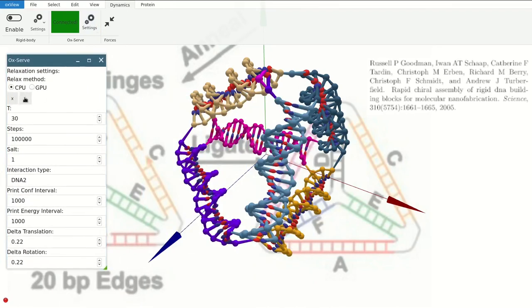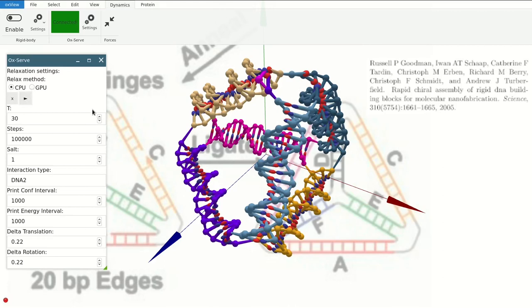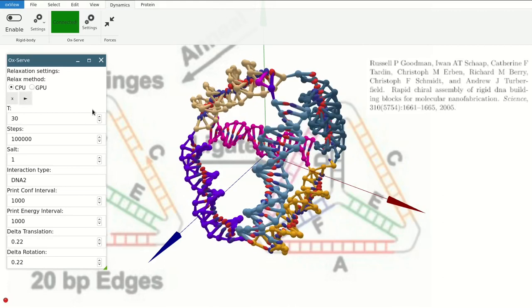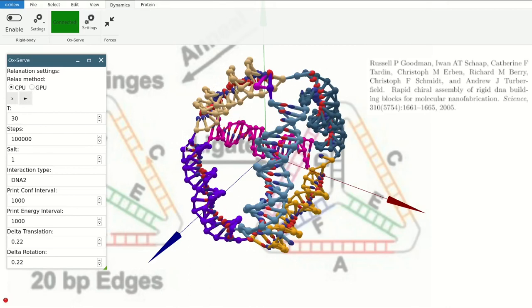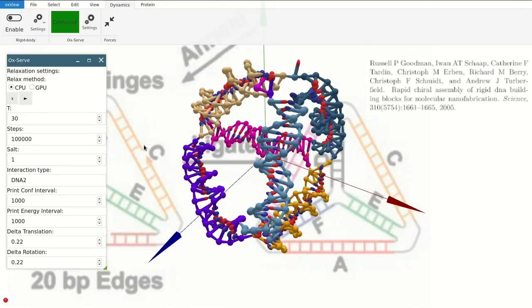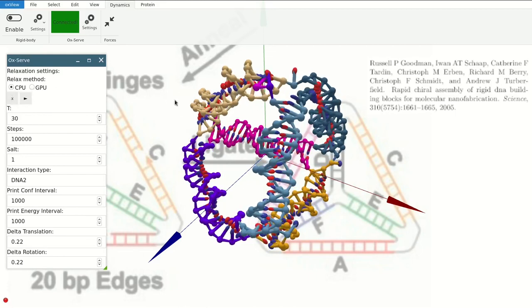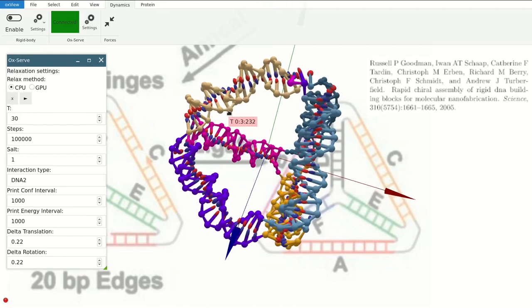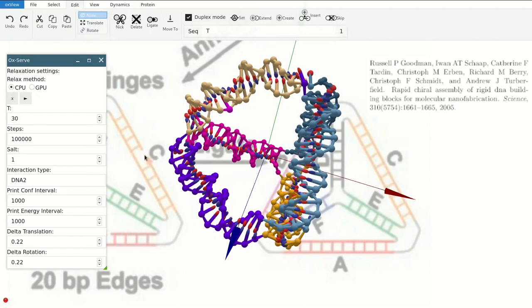Then I can just start the dynamics and see how they move over time. So now everything is relaxed together a bit. If I realize I want to add these hinges here, or not the hinges but have a nick there, I can add a nick to see how it moves with the nick there and just continue simulating.